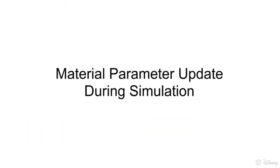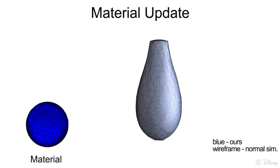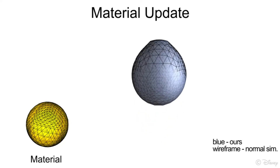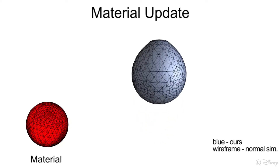Similarly, our method can handle updating material properties during simulation as well. Again, our result is shown in blue with traditional simulation overlaid in wireframe. The rest shape is shown on the left with color coded material properties, where blue is soft and red is stiff.